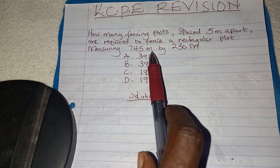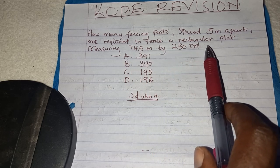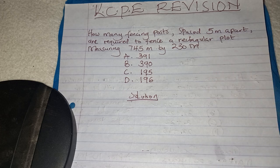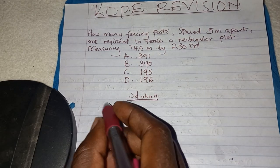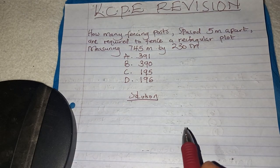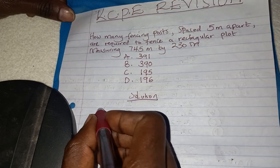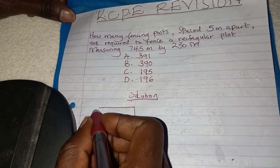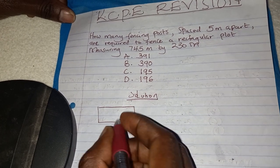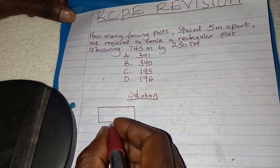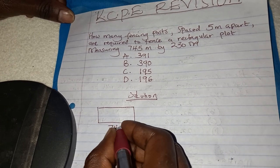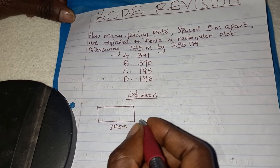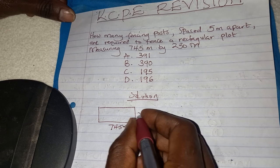In this question, it requires you to start by finding the perimeter of the rectangle. Don't forget to draw a sketch. You start by drawing a sketch. You are told the length is 745 meters and the width is 230 meters.